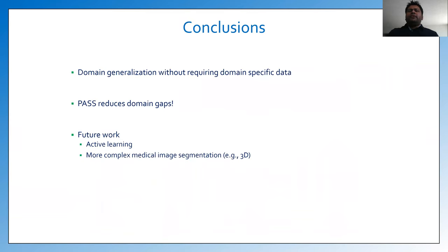In conclusion, we performed domain generalization for improved medical image segmentation without requiring domain-specific data. Our model, validated against eight public datasets, shows effectiveness in vascular and pulmonary segmentation tasks by significantly reducing domain gaps. In future work, we are planning to employ active learning in our model and validate on more complex segmentation tasks like 3D medical image segmentation. Thanks for your time and attention — you are welcome at my poster session. Please let me know if you have any questions or feedback.